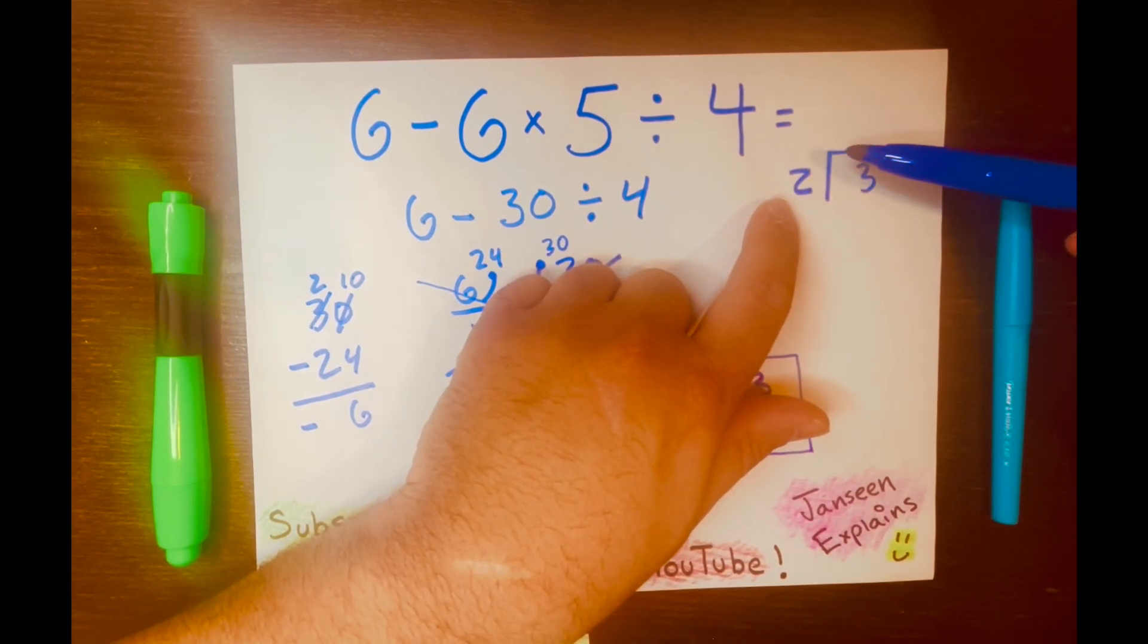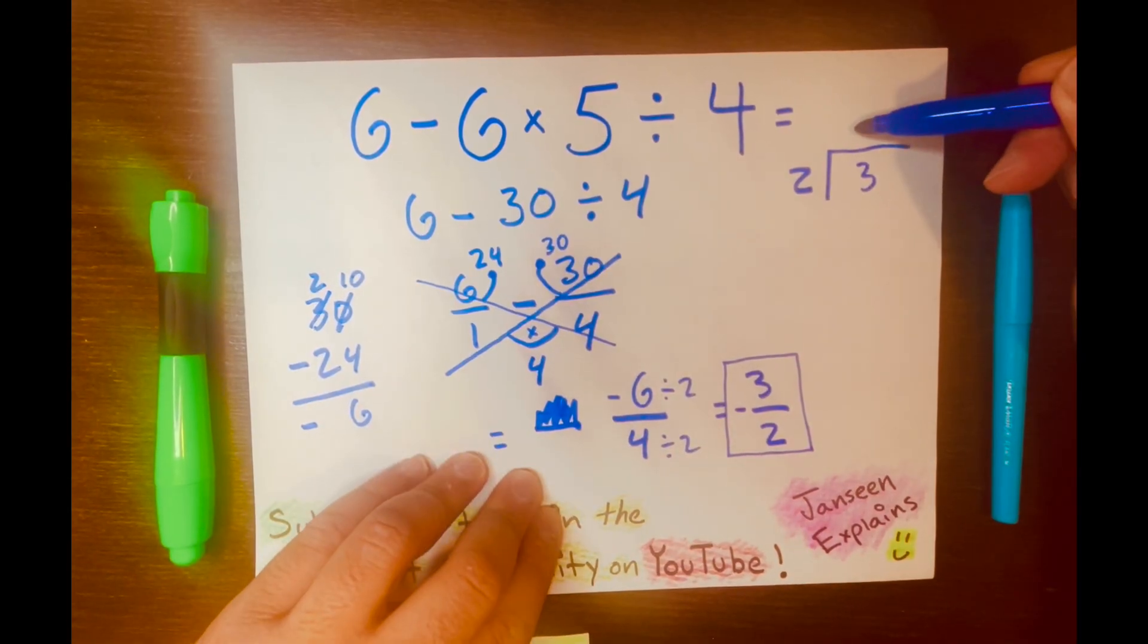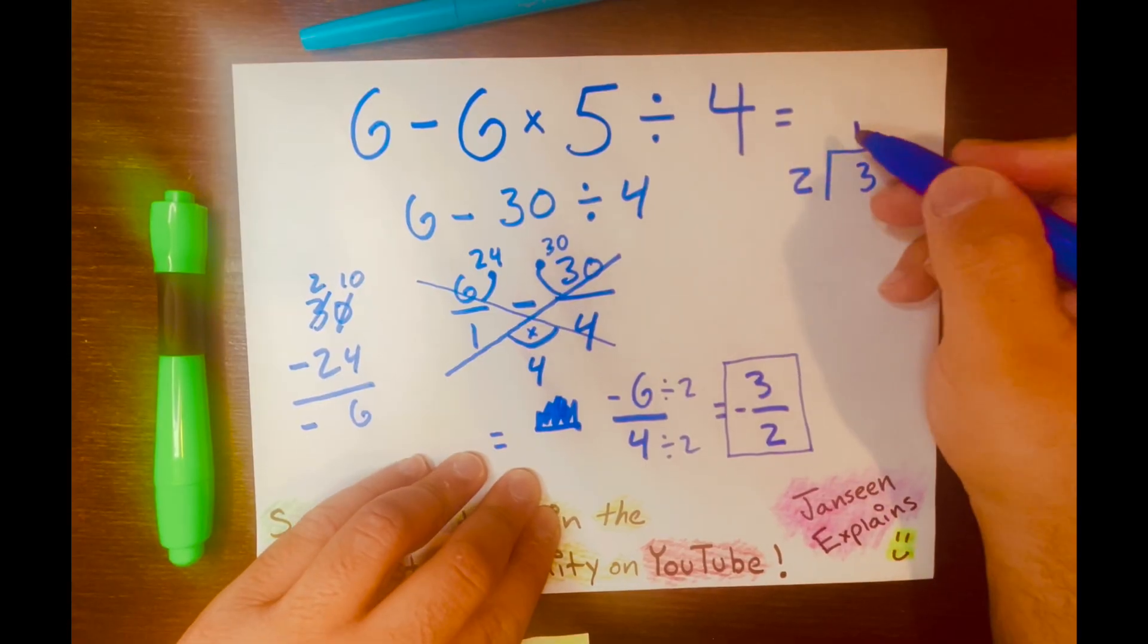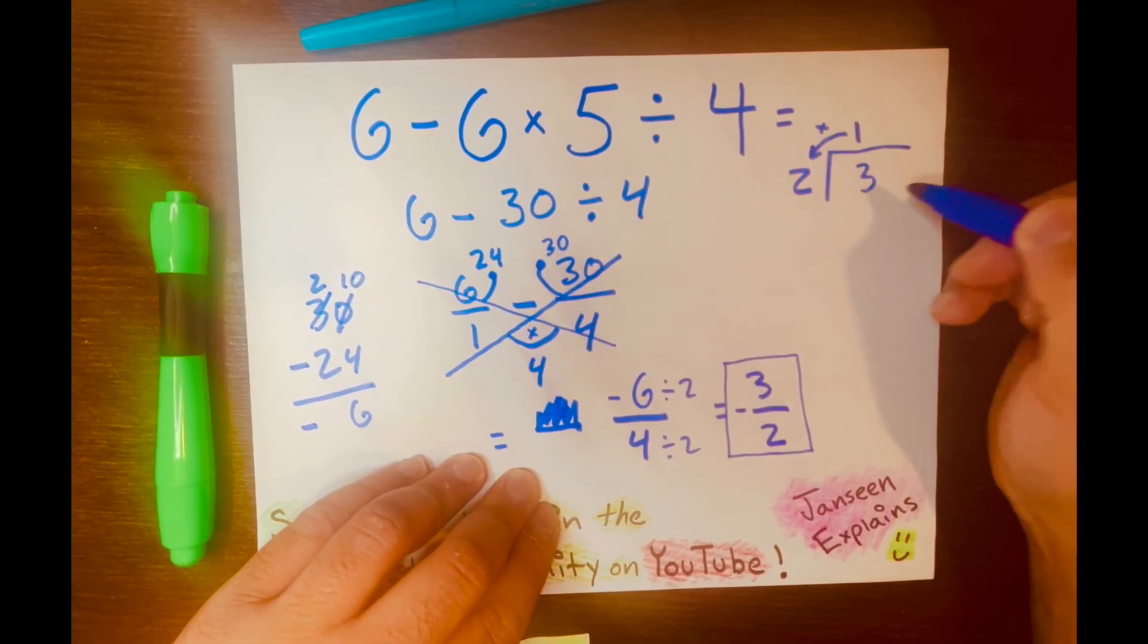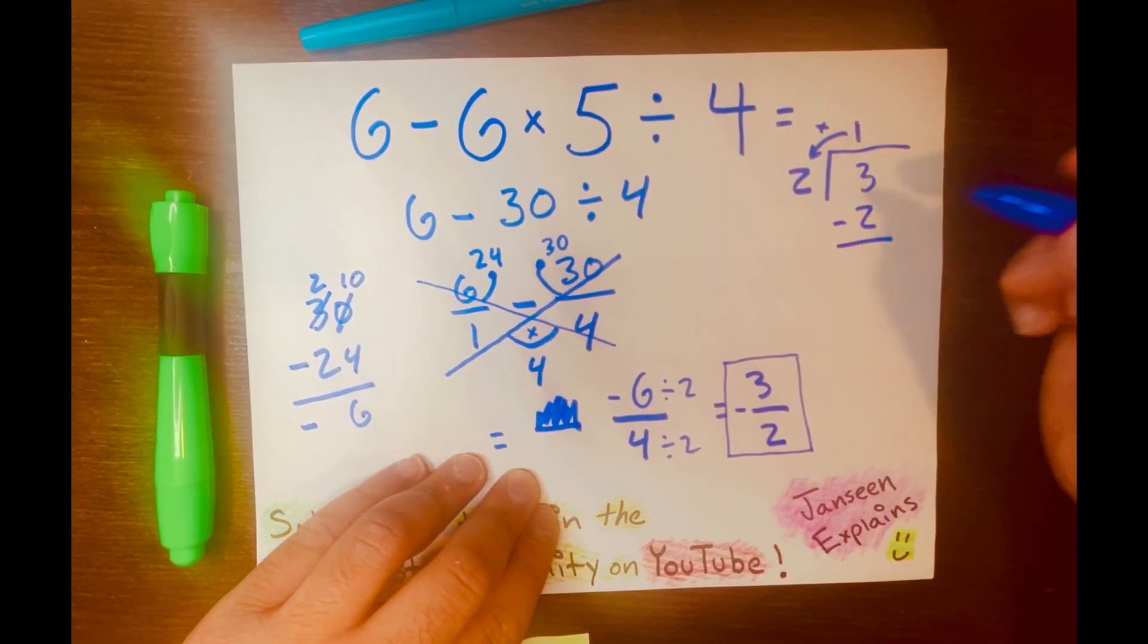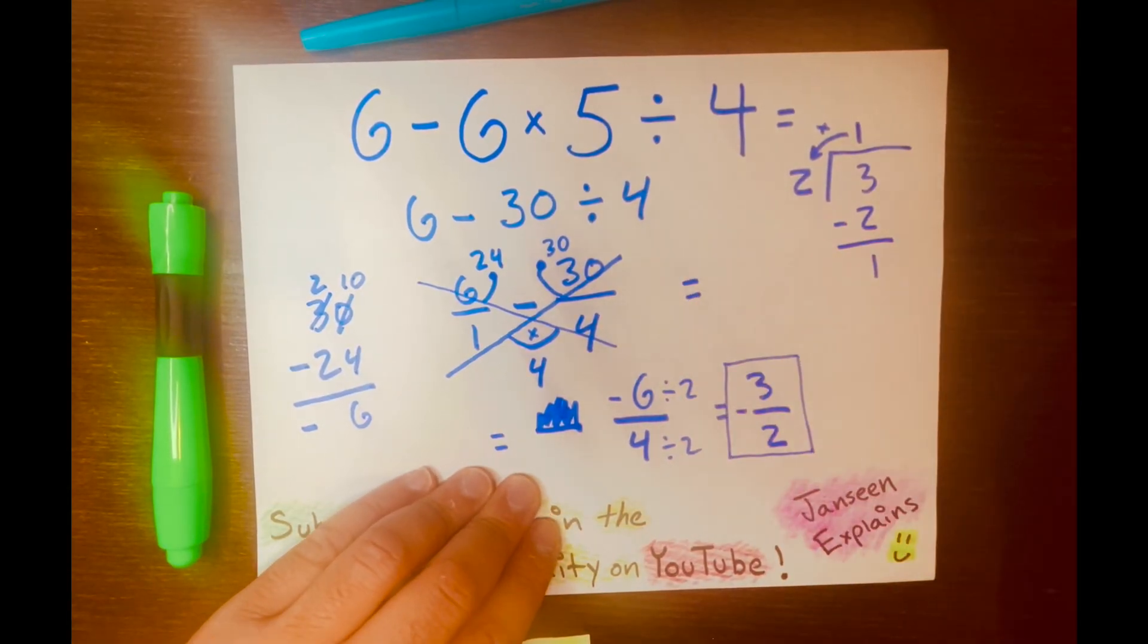And 2, how many times can 2 fit into 3? 1 time. And 1, let me move this marker out of the way. 1 times 2 is 2. And we subtract. 3 minus 2 is 1, right?